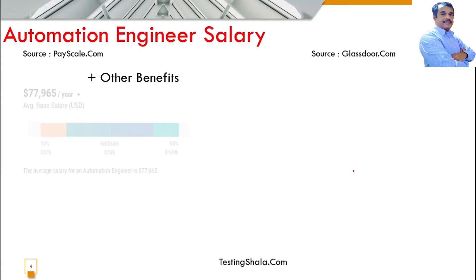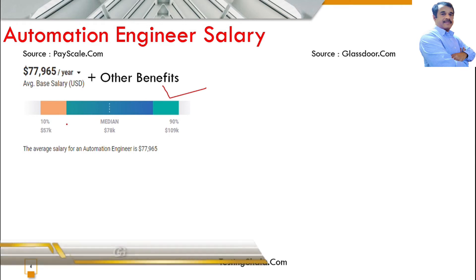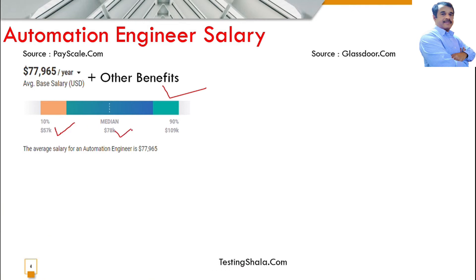Now let's look at the overall salary for an automation engineer. According to PayScale, the average salary is around $77k per year, with the lowest at $57k, the median at $78k, and the maximum at $109k.